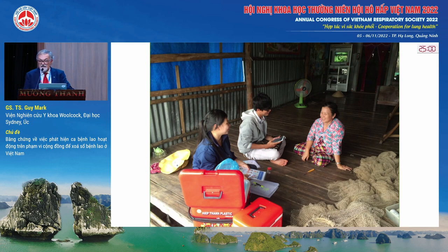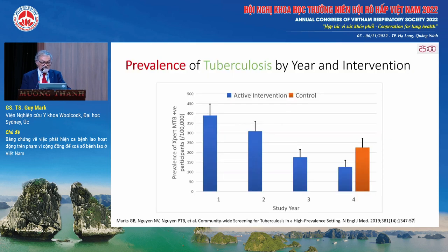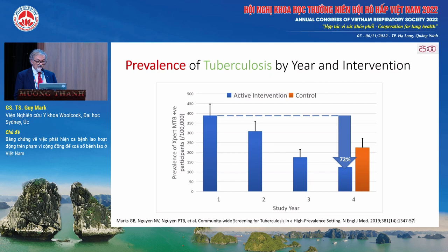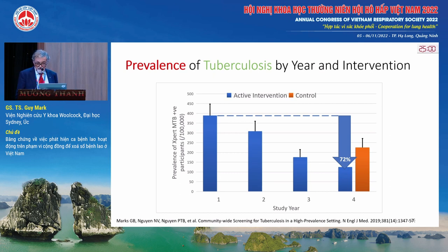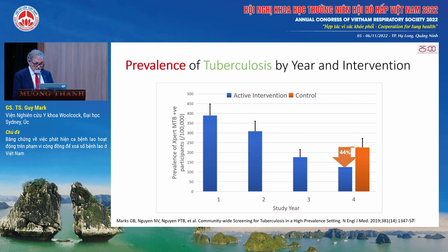We did this annually every year for three years in the intervention arm, and in the fourth year we went to both the intervention and control arms and did the same thing. The prevalence of TB showed a 72% decrease over the four years of the study — a massive decrease between the first and fourth year. In the final year, we also tested the control group who had not been previously screened. The prevalence in the control group was lower the first time than it had been in the intervention group at the beginning, and the difference between the two was 44%. So the effect of the intervention in the randomised controlled trial was a 44% reduction in the prevalence of TB.